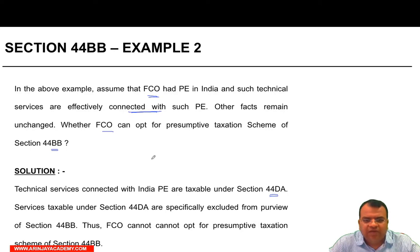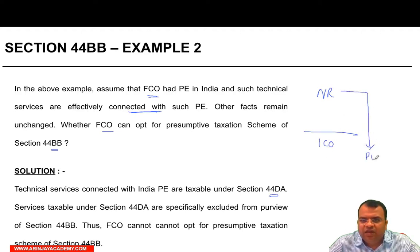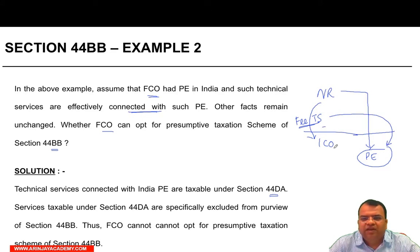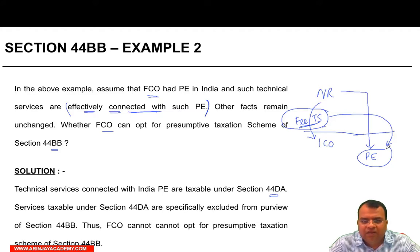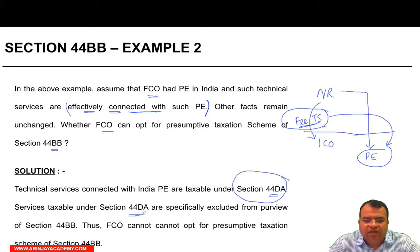What happens under Section 44DA? Suppose there is a non-resident who is providing services to an Indian company, and this non-resident has a PE in India. Those technical services are effectively connected with the PE — there is a detailed rule to identify whether the services are effectively connected with the PE or not. When a non-resident effectively renders services connected to a PE in India, this is taxable under Section 44DA. If the services are covered under Section 44DA, they are excluded from the purview of Section 44BB. Therefore, the foreign company cannot opt for presumptive taxation under Section 44BB.